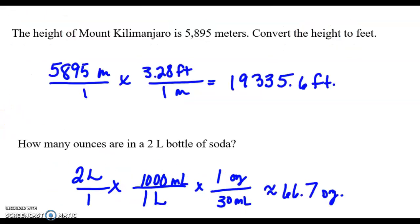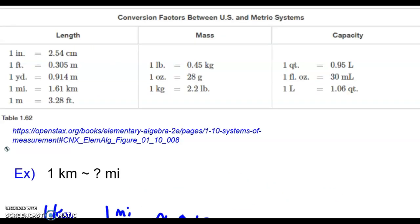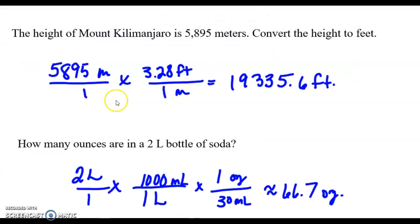Let's try another one. The height of Mount Kilimanjaro is 5,895 meters. How do we convert that height to feet? I start with what I'm given, the 5,895 meters over one, and then I go back to the relationship. One meter is 3.28 feet. So I put the 3.28 feet on top, the meters on bottom. I want the meters to cancel, so I need one on top and one on bottom. Then I multiply straight across the top and the bottom and get my final answer of 19,335.6 feet.